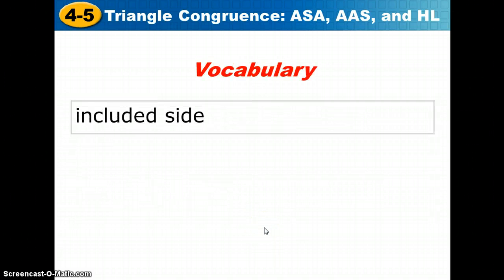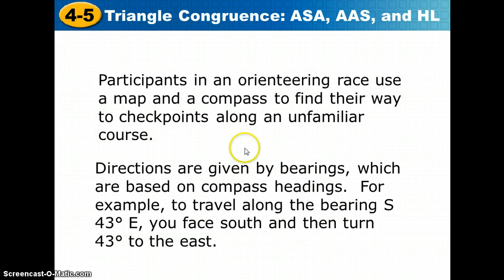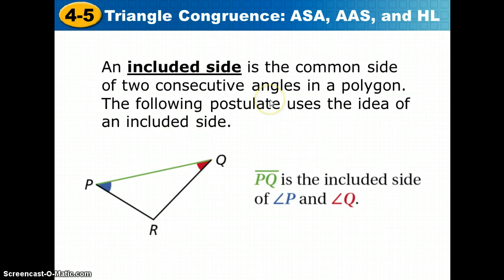Your only vocab term that you need to write a definition for in this lesson is included side. Previously, we talked about what an included angle was. That was an angle that was between two sides, or formed by two sides. An included side we will talk about in just a moment. So let's talk about what an included side is. It's the common side of two consecutive angles in a polygon. The following postulate uses this idea of an included side.